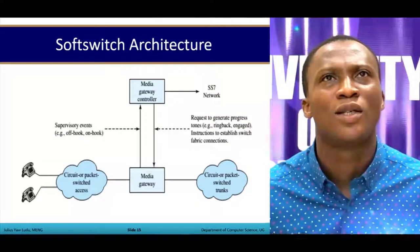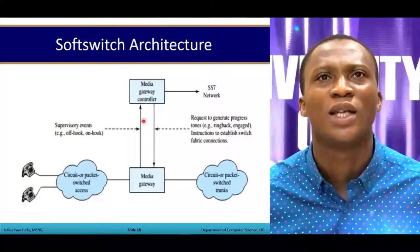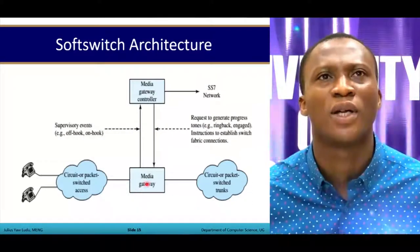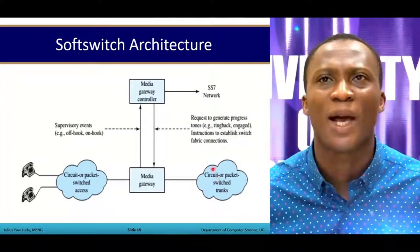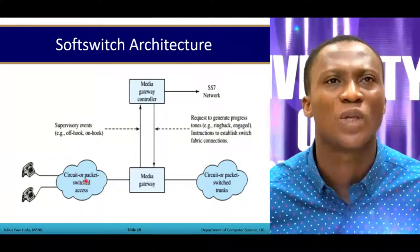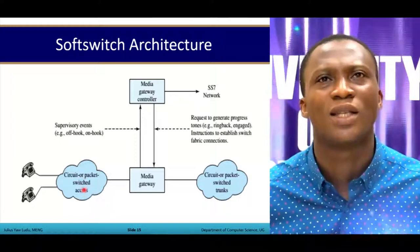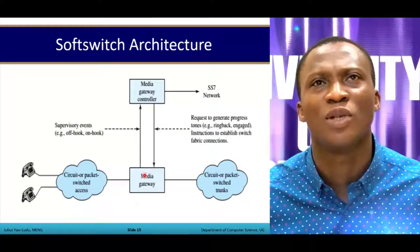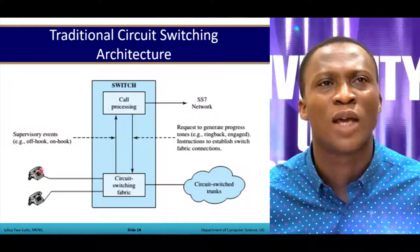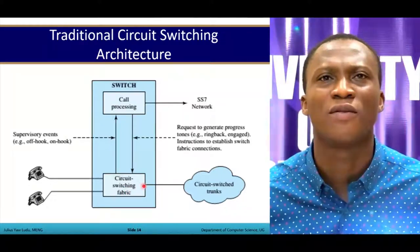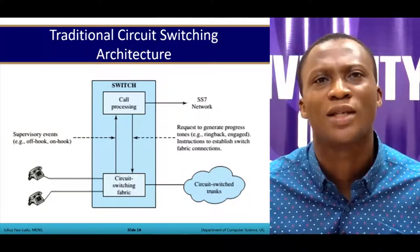In the proposed new soft switch architecture, the media gateway controller handles call processing and the media gateway handles the circuit switch fabric. We still have supervisory events and requests to generate progress. Telephone lines now go through packet switch access to the media gateway, and data is transmitted between the media gateway and the media gateway controller — unlike previously, where telephone lines went straight to the circuit switching fabric. That brings us to the end of this session; see you in the next one.